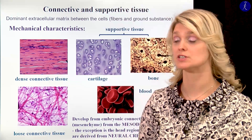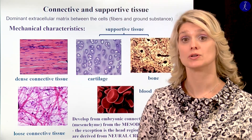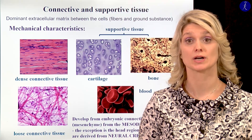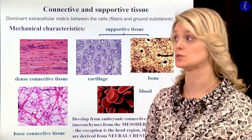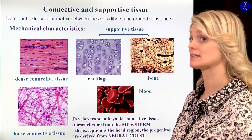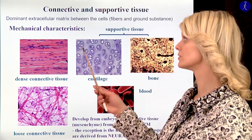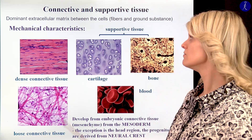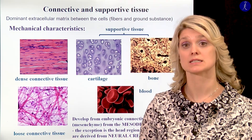So what is the connective tissue and supportive tissue? This is one of the basic tissue types. The main characteristic is that we have a very dominant extracellular matrix between the cells, where we have fibers and the ground substance.